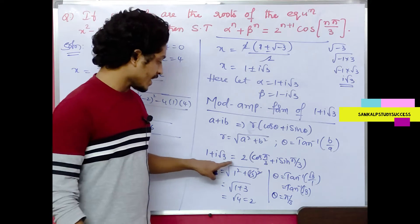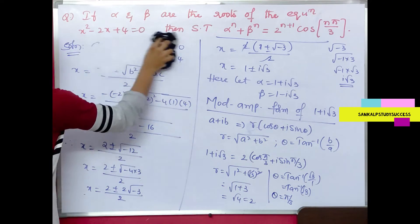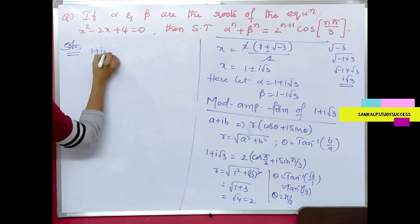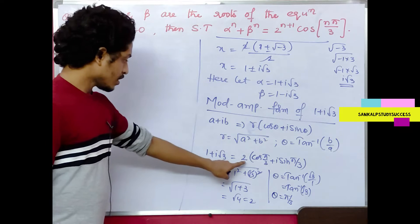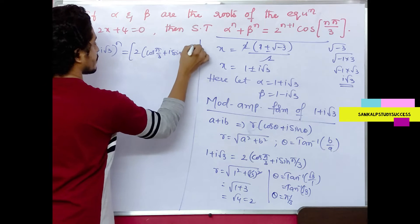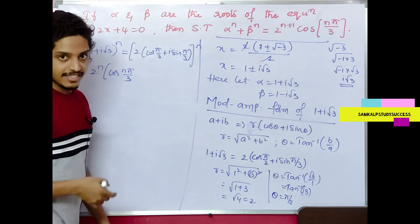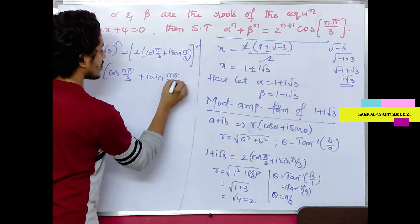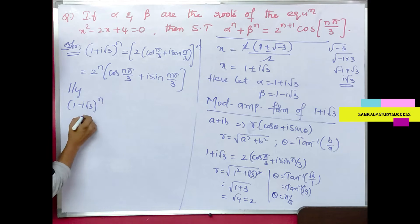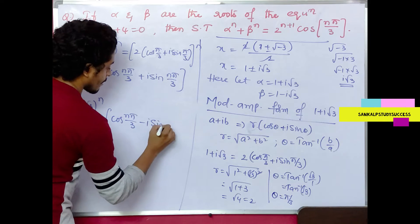So the modulus-amplitude form of 1 + i√3 is 2(cos(π/3) + i sin(π/3)). Therefore α^n = 2^n · (cos(π/3) + i sin(π/3))^n. Applying De Moivre's theorem: α^n = 2^n(cos(nπ/3) + i sin(nπ/3)).